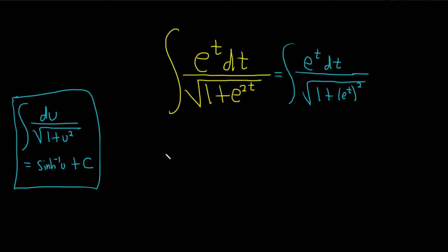So we can simply do this by making a u substitution. We'll let u equal e to the t, because then it will match the formula. And then taking the derivative, we have du equals e to the t dt, because the derivative of e to the t is just e to the t.